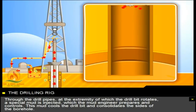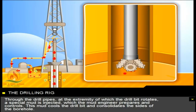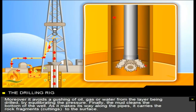Through the drill pipes, at the extremity of which the drill bit rotates, a special mud is injected, which the mud engineer prepares and controls. This mud cools the drill bit and consolidates the sides of the borehole. Moreover, it avoids a gushing of oil, gas, or water from the layer being drilled by equilibrating the pressure.